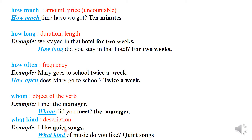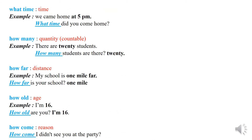'What kind' is for description. Example: I like quiet songs. What kind of music do you like? Quiet songs — 'quiet songs' is a description.